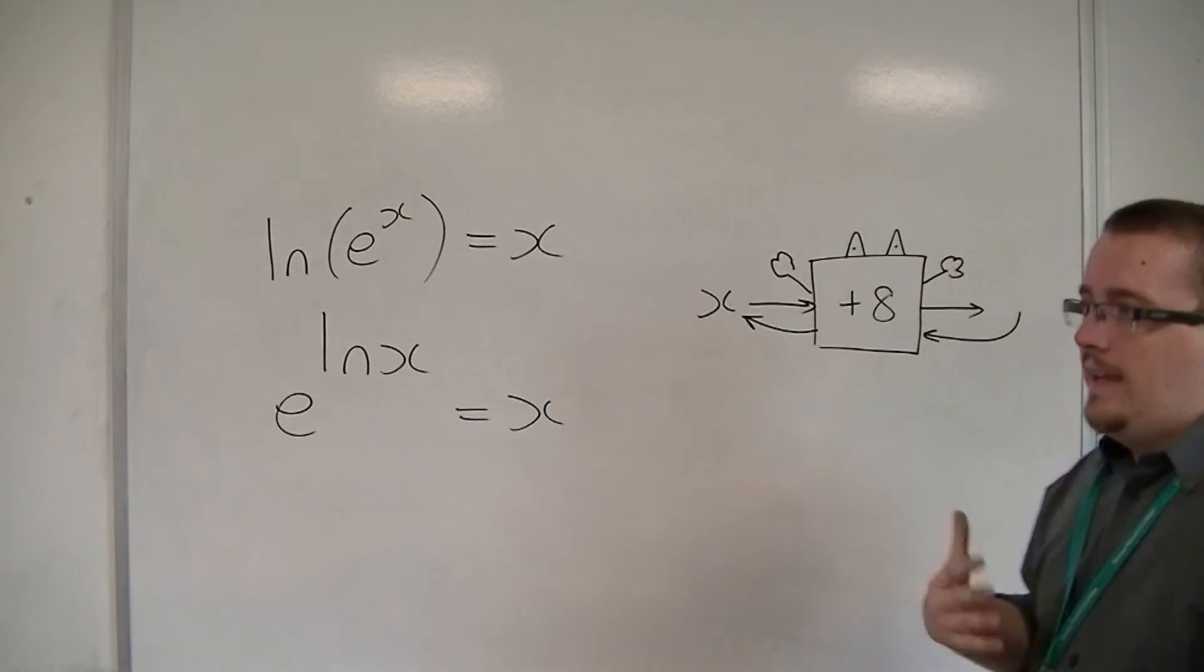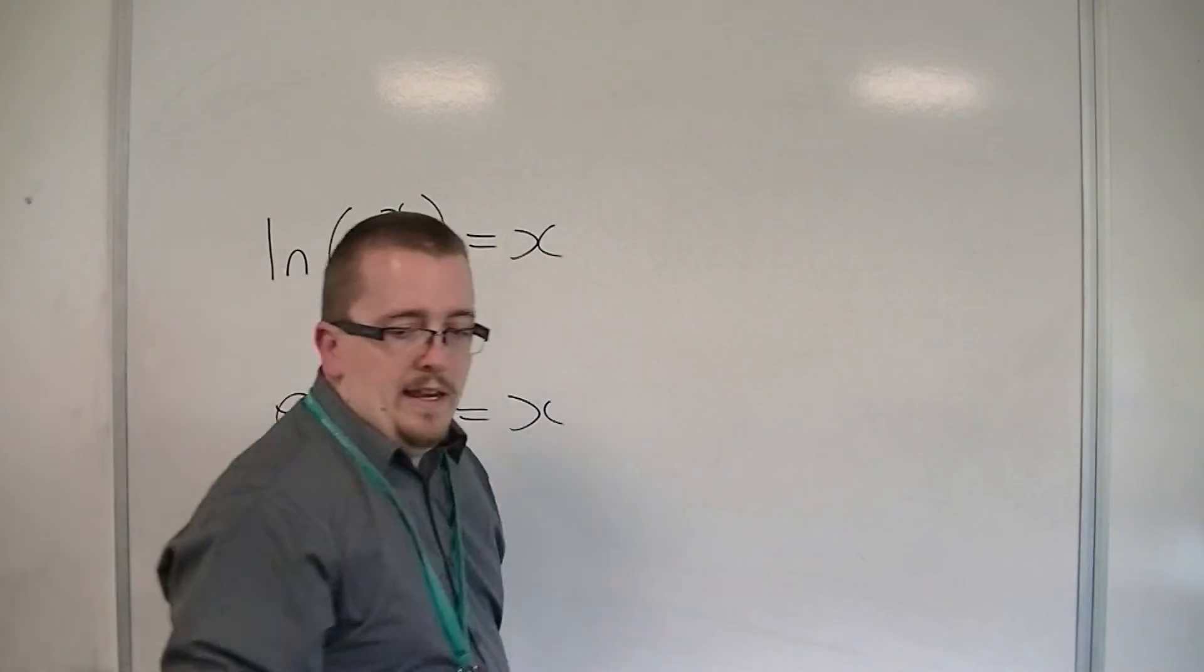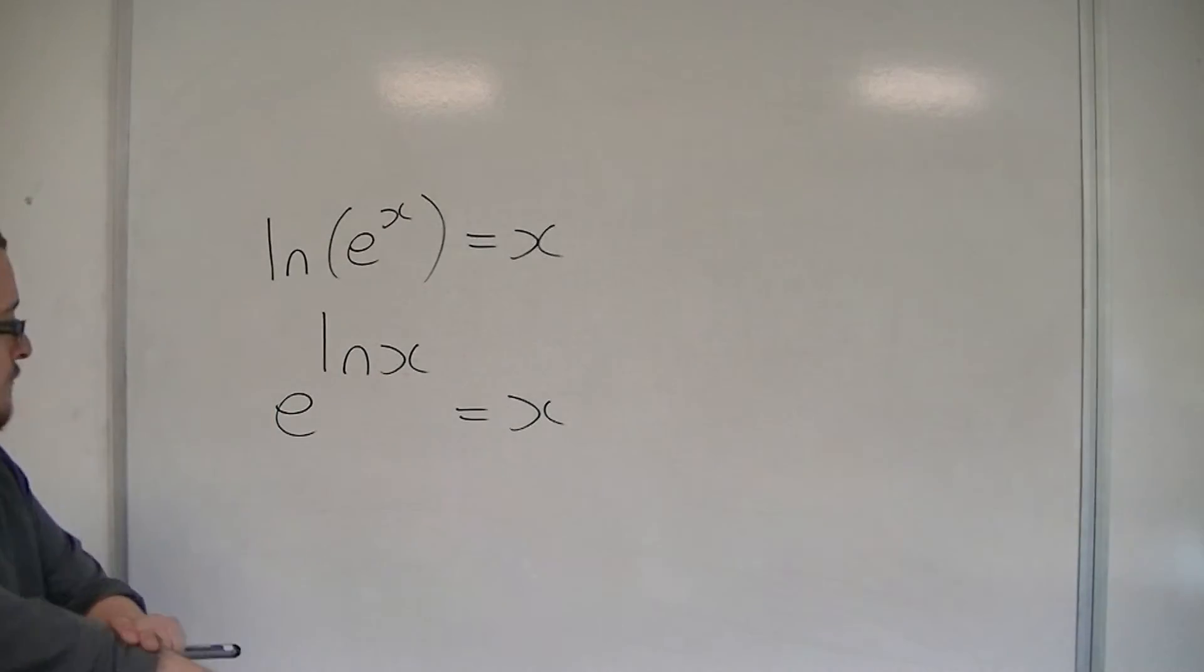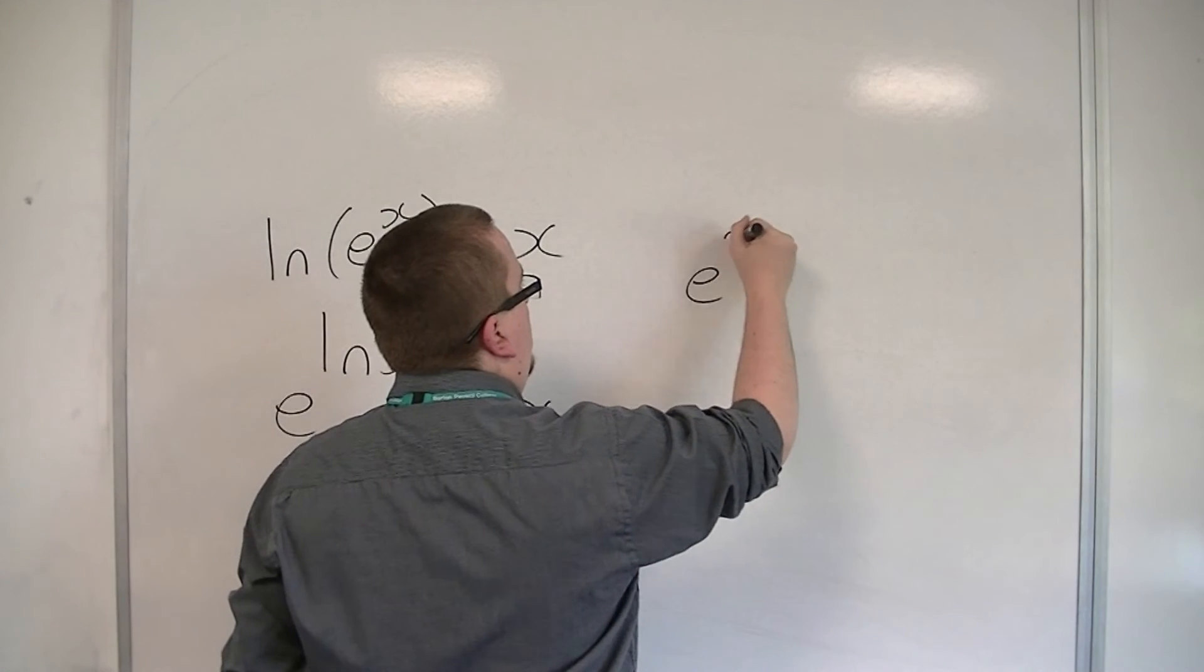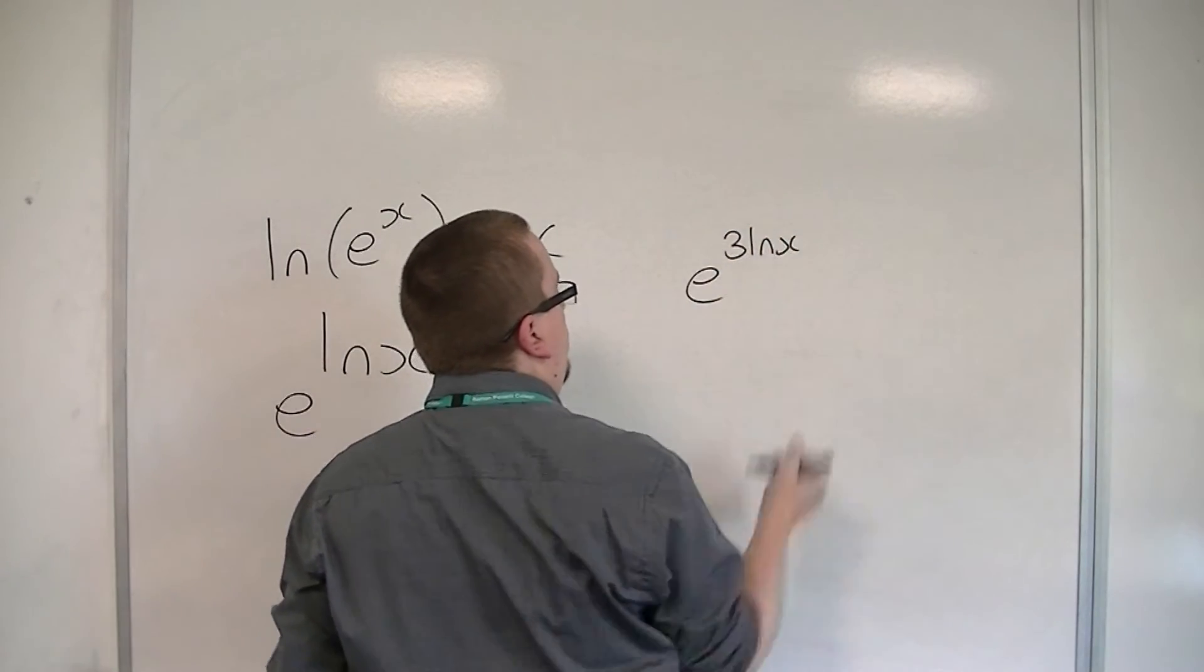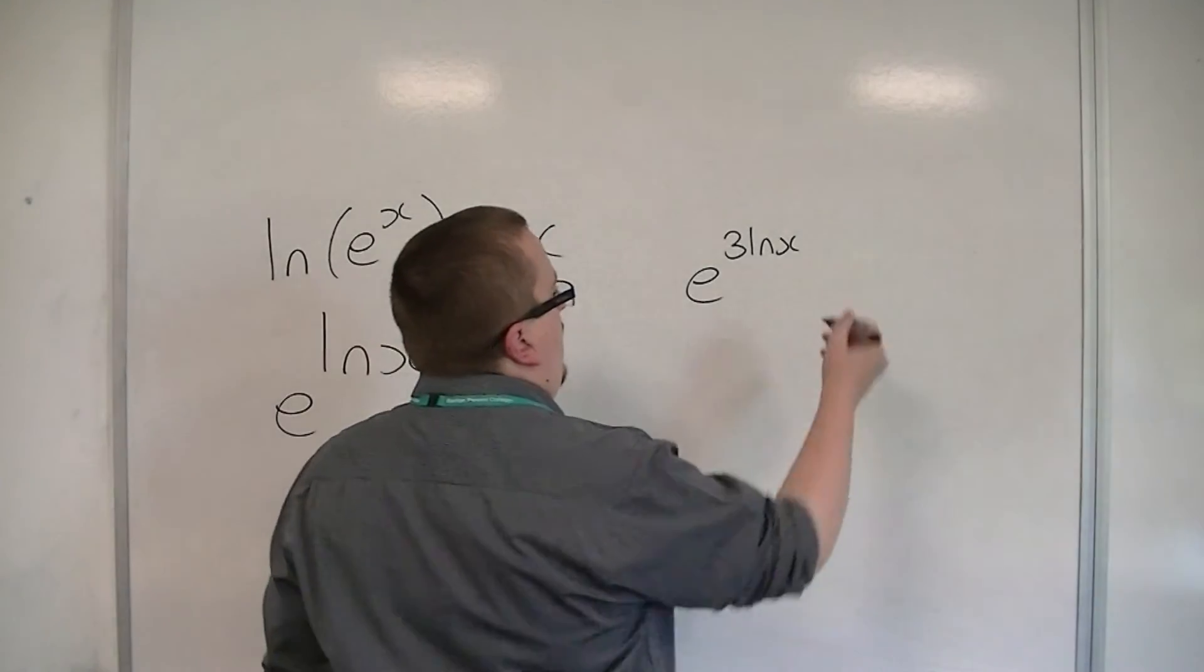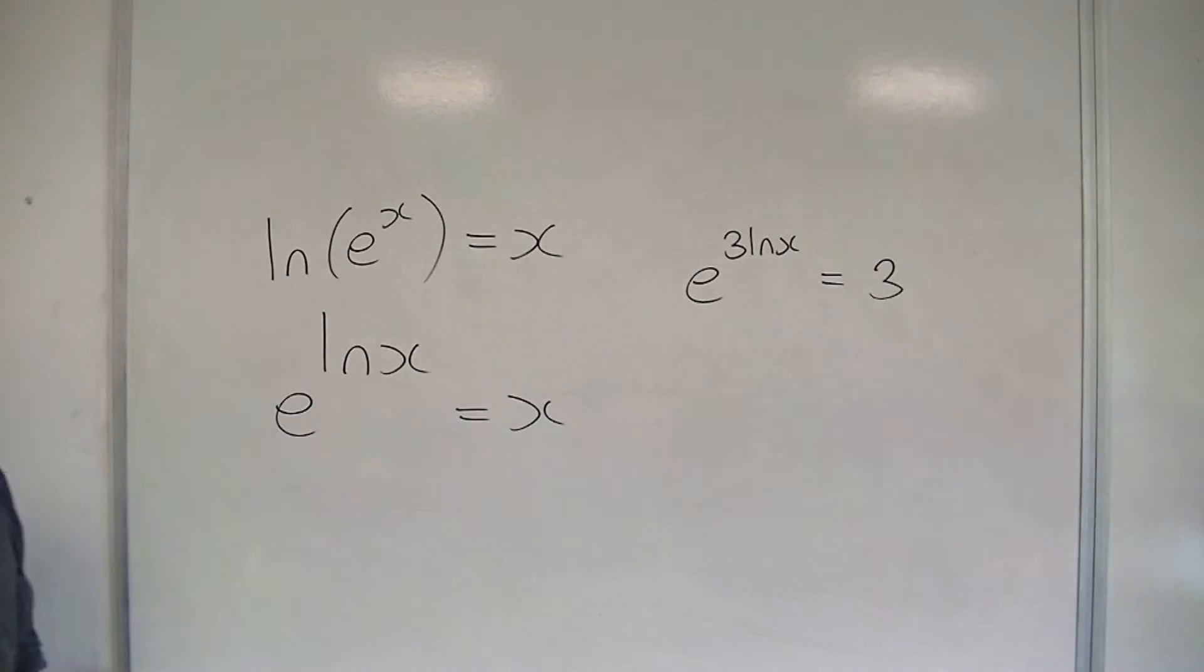Now, you've got to be careful with this, because this can lead some people to the assumption that, for example, if you had e to the 3 log x, then what that would mean is some people would write that down as just 3.